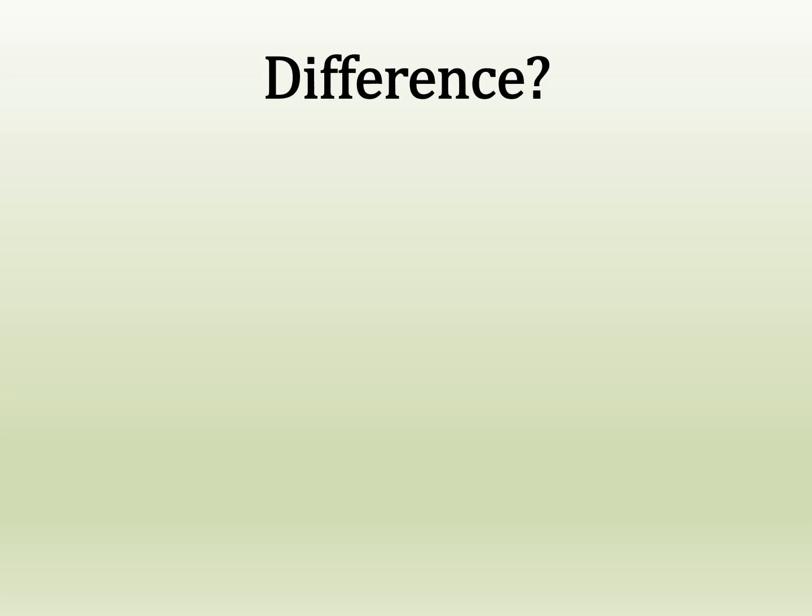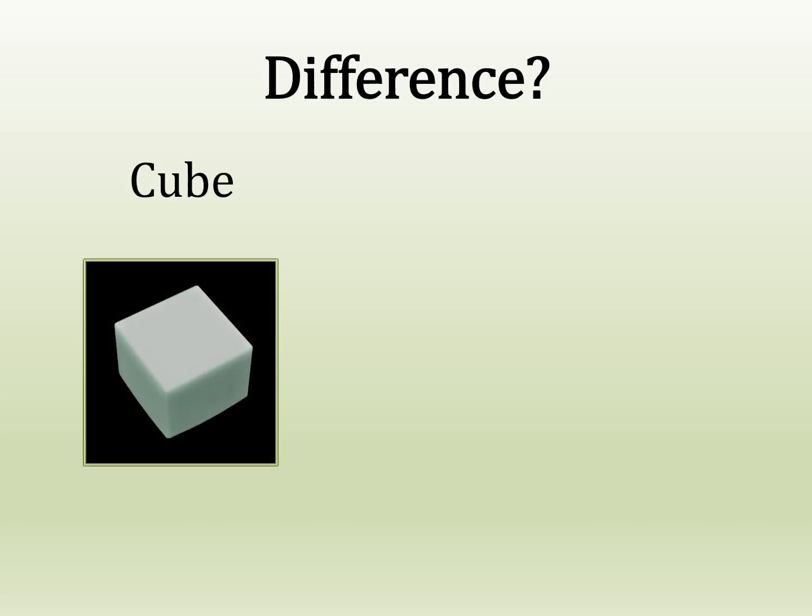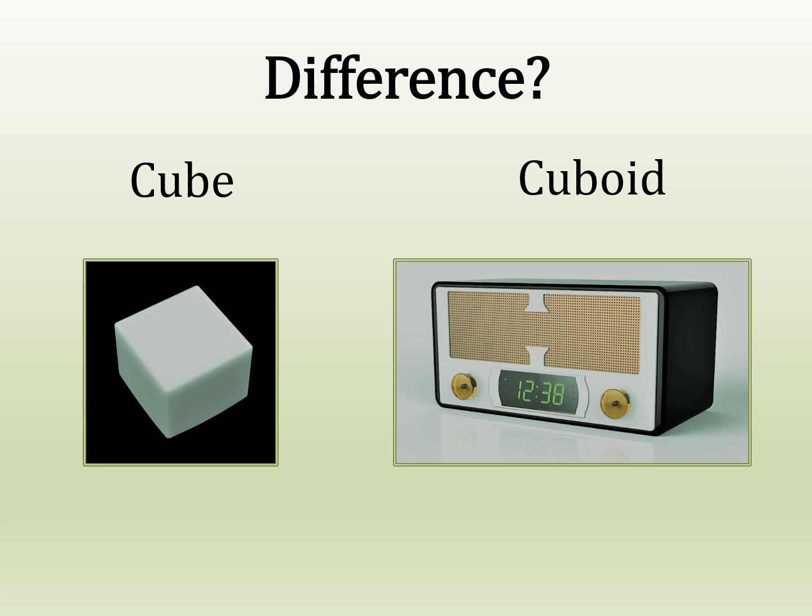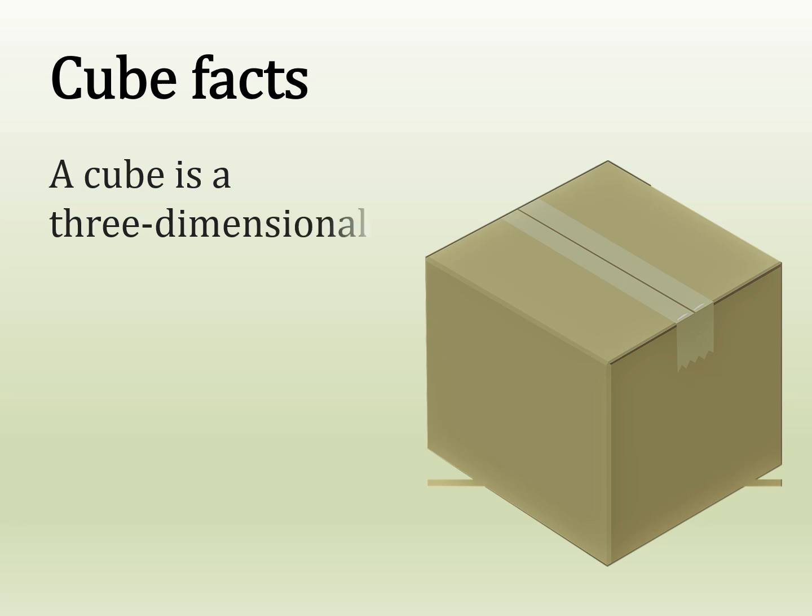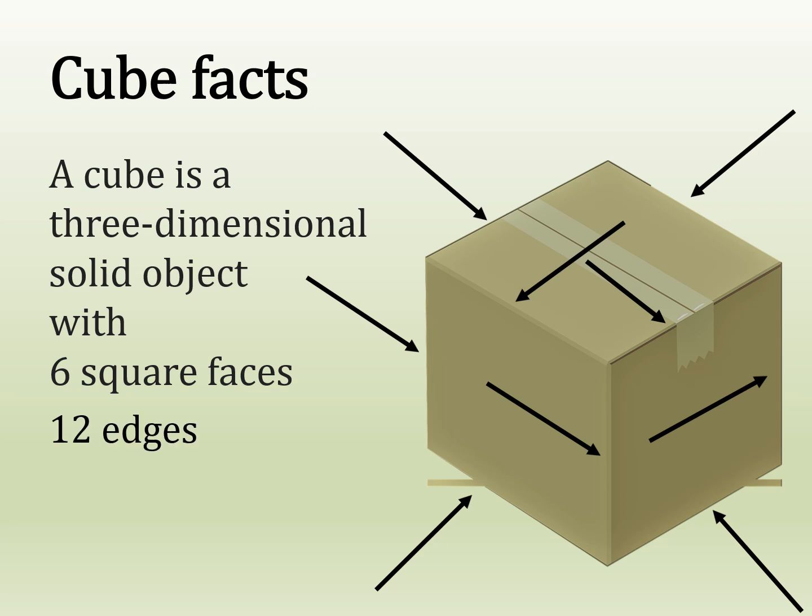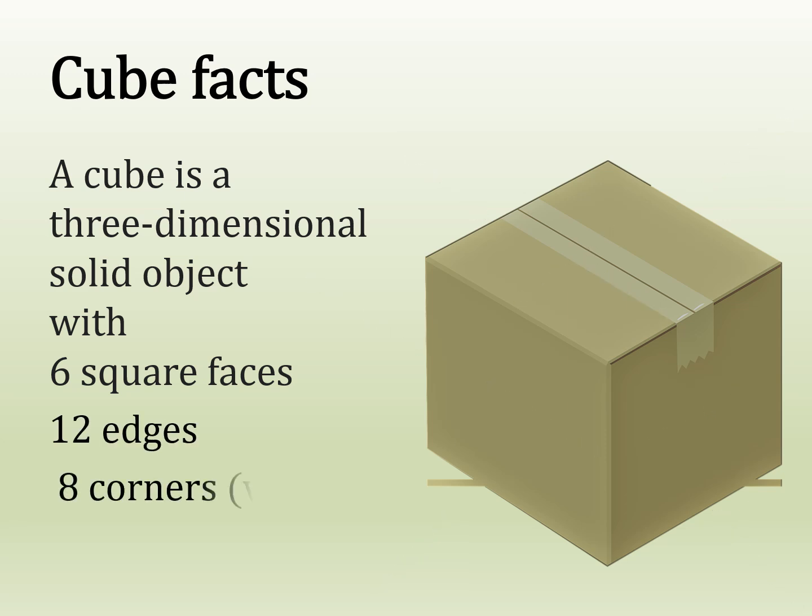We're going to look at the difference between a cube and a cuboid. Let's look at some cube facts. A cube is a three-dimensional solid object with six square faces, twelve edges, and eight corners which are called vertices.